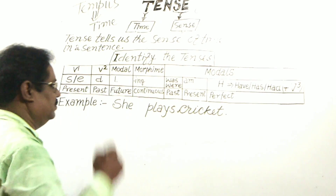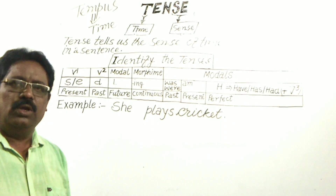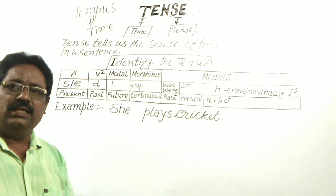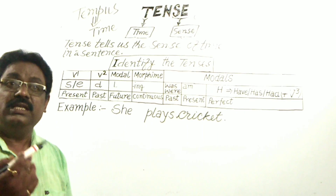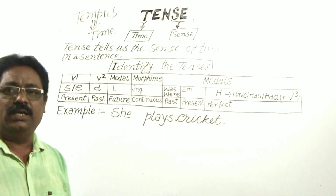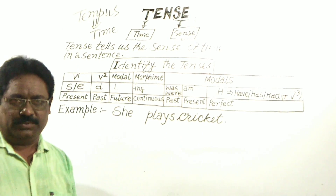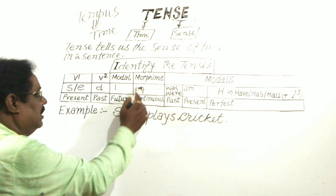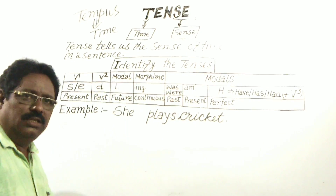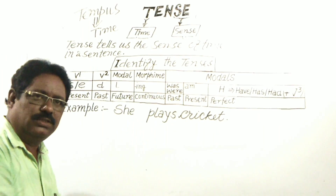Now, morphemes: when we add D, S, ES, or ING to the first form of a verb, these are called morphemes. Here ING is a morpheme. When there is ING in a verb, it denotes continuous tense.